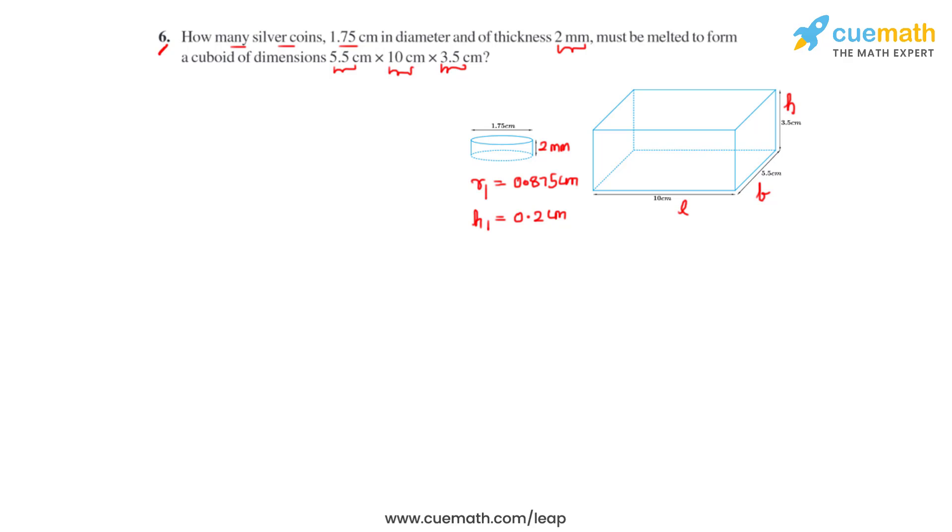Now let's say there were n such silver coins which were melted to form the cuboid of the given dimensions. So the volume of n such cylindrical coins will be equal to the volume of the cuboid.